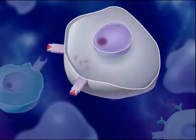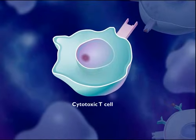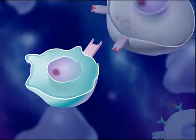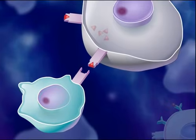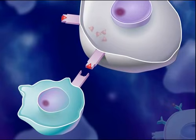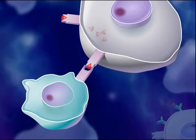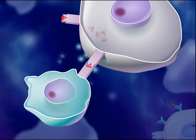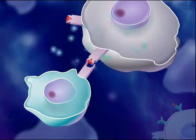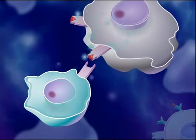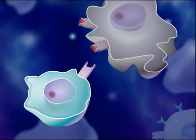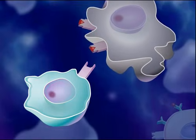The body makes millions of different types of cytotoxic T-cells, each type able to recognize a particular antigen. The cytotoxic T-cells capable of recognizing the antigen displayed on the surfaces of infected cells bind to the infected cells and produce chemicals that kill the infected cell. Death of the infected cells results in destruction of the pathogen.